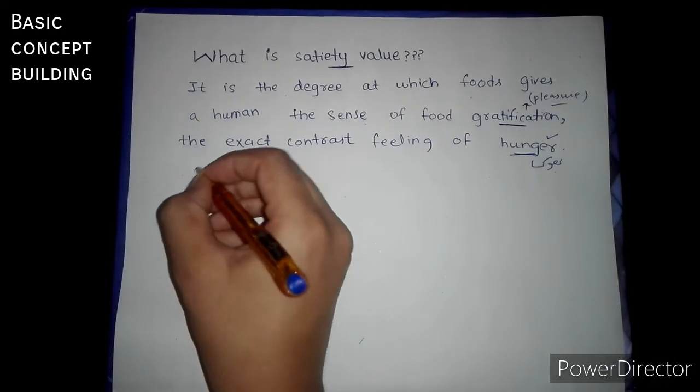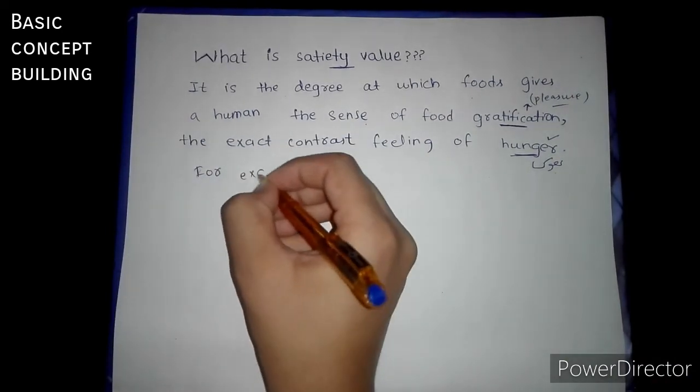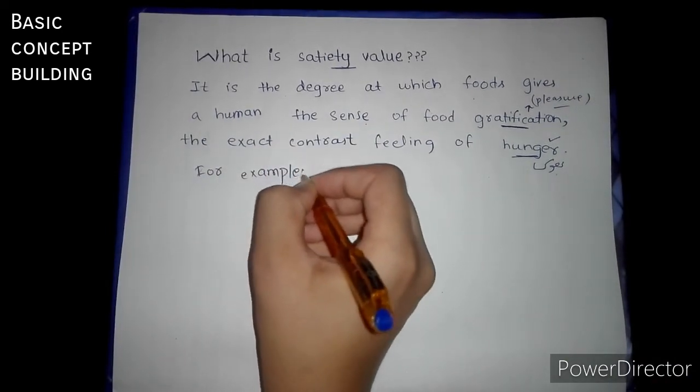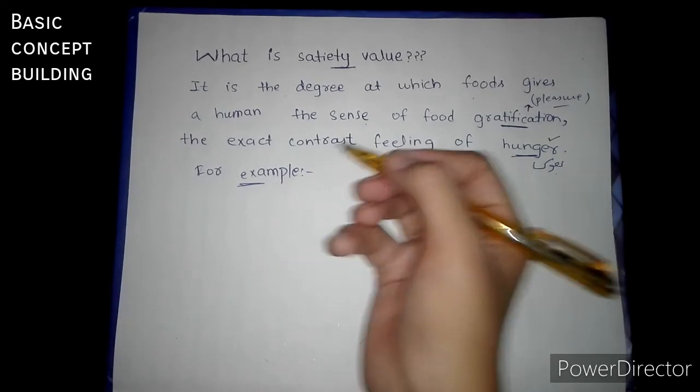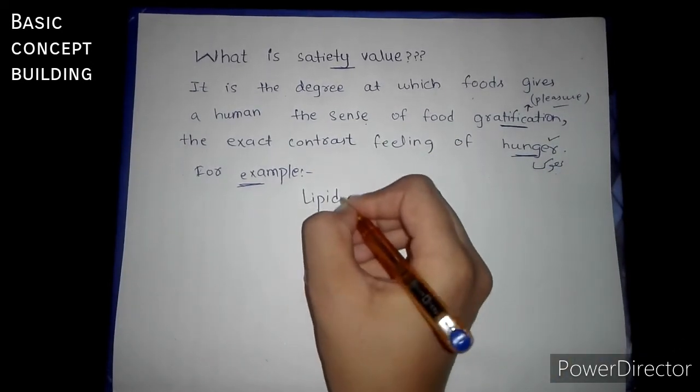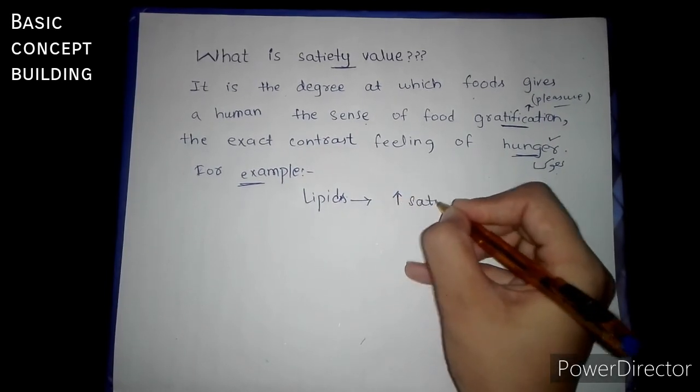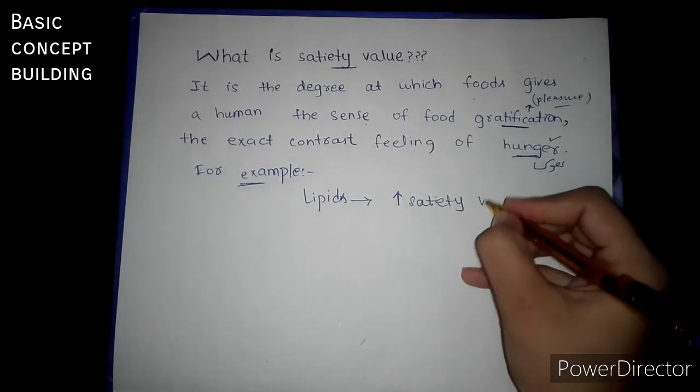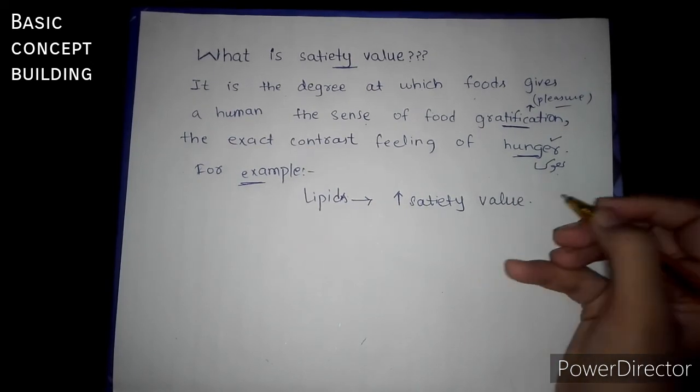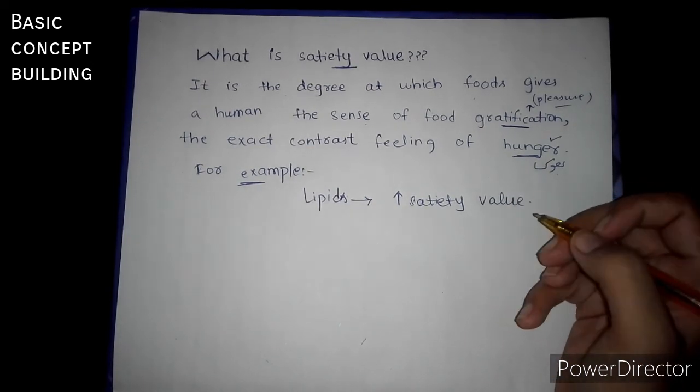For example, if we have lipids, the food in lipids is more in quantity, then the satiety value is high. After lipids, protein has higher satiety value.